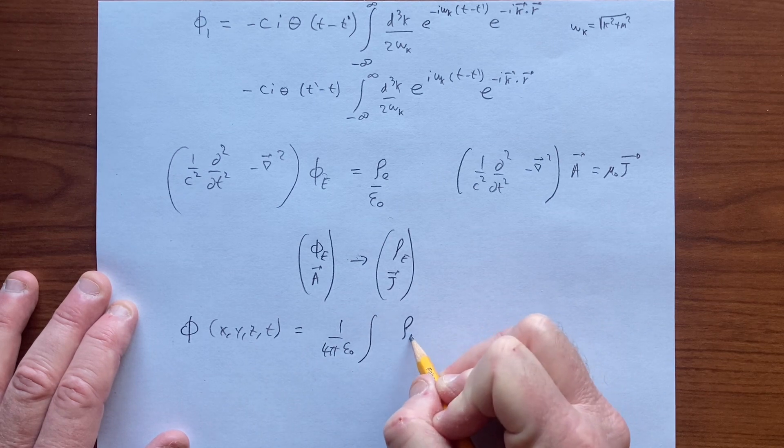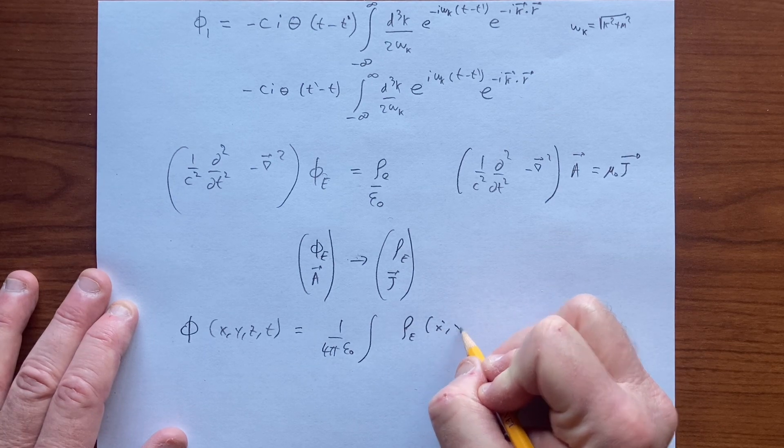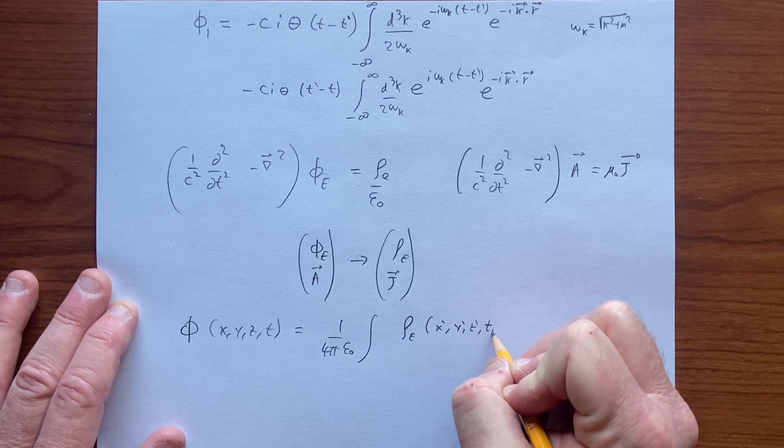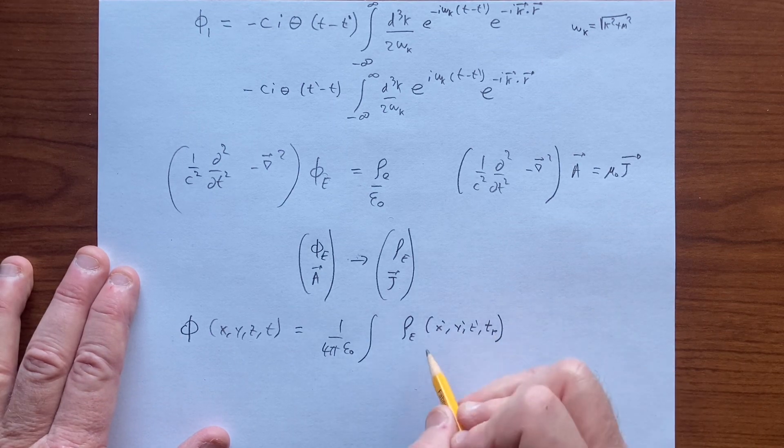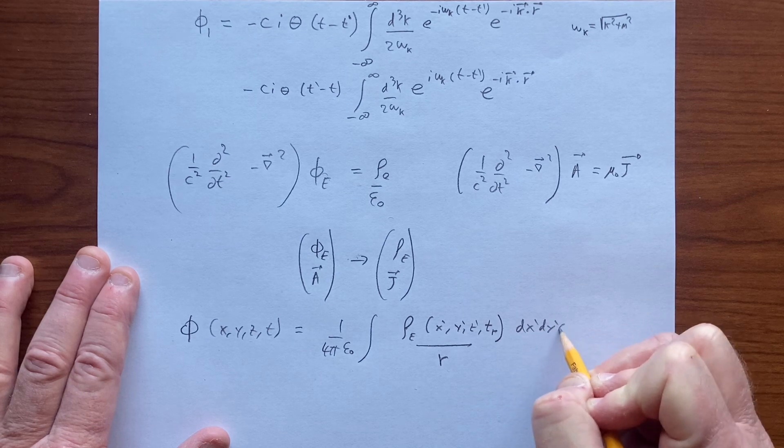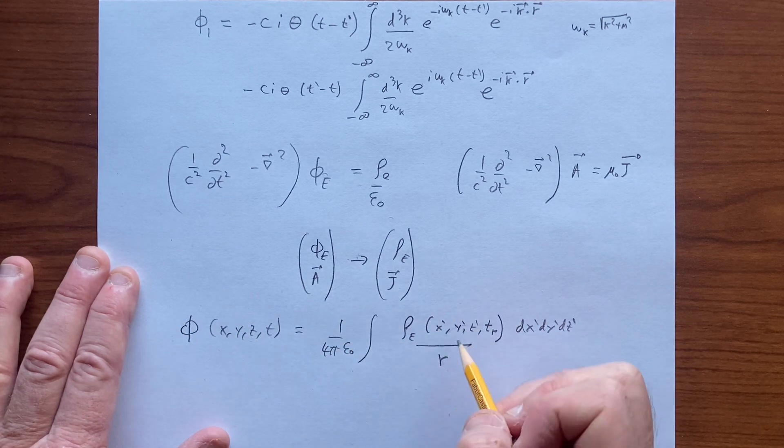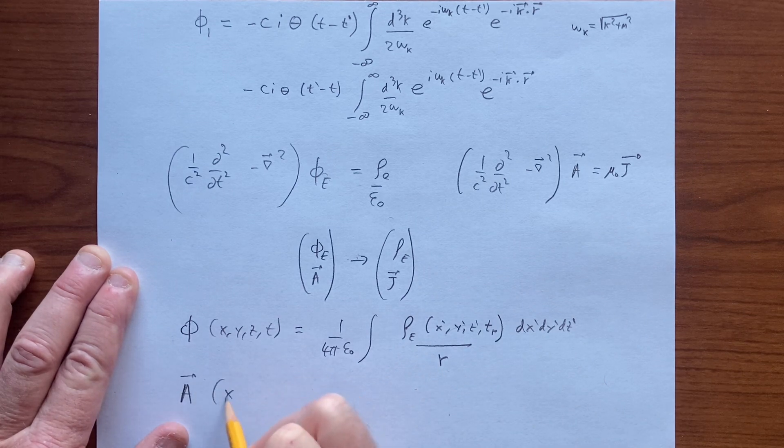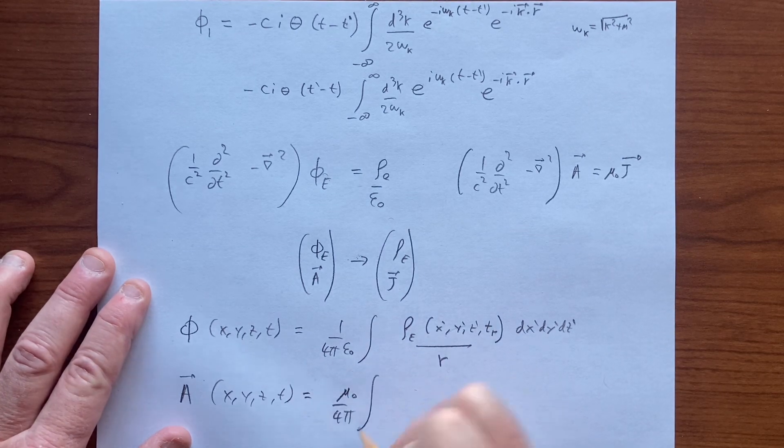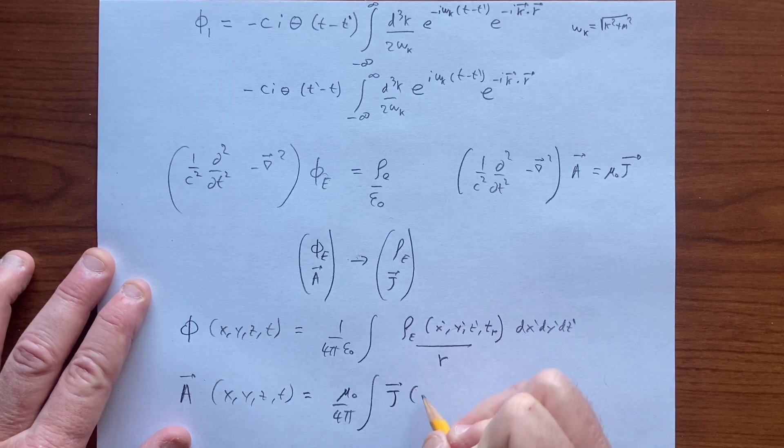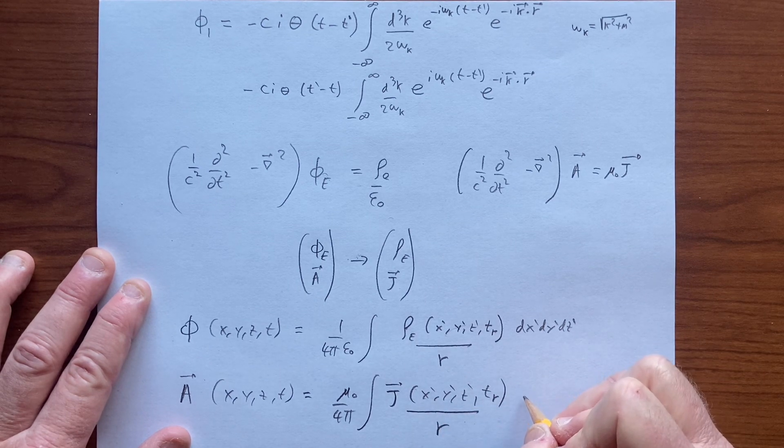Where the charge is at some moment which is earlier in time, usually called t retarded. So we're integrating over all of space to capture the effect on the field at some location given where the charge was, and the same is true for the vector potential. So maybe you've seen this in E and M, we're integrating over the fields where at some earlier time t retarded.